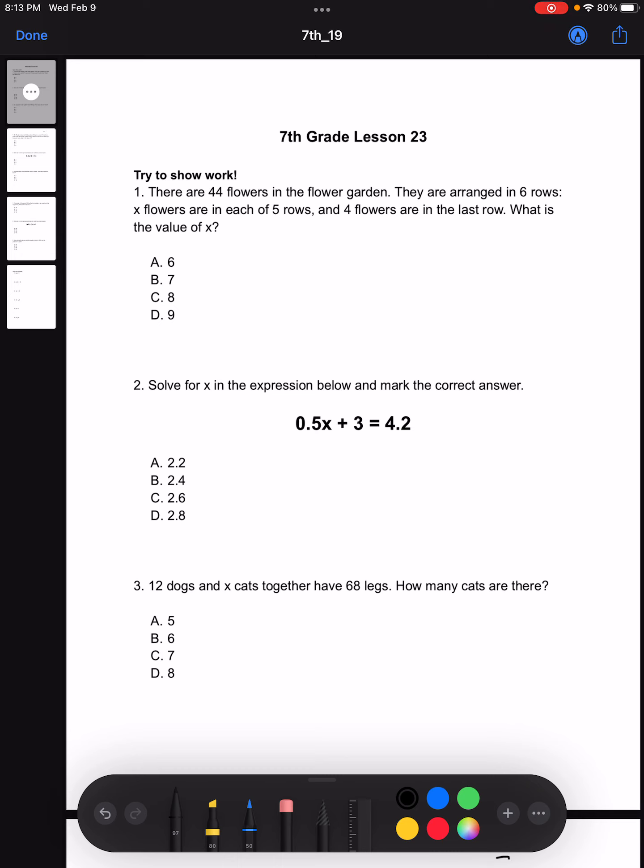Looking at number one, there are 44 flowers in the flower garden. They are arranged in six rows. X flowers are in each of five rows and four flowers are in the last row. What is the value of X?